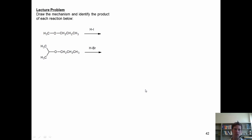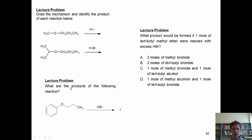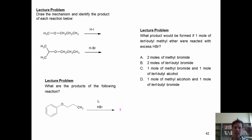Here are some problems: draw the mechanism and identify the product for each of the following reactions. What product would be formed if one mole of tert-butyl methyl ether were reacted with excess HBr? What are the products of the following reaction? That takes us to the end of our presentation. Look forward to seeing you at our next presentation where we'll be talking about something else. Until then, see ya.